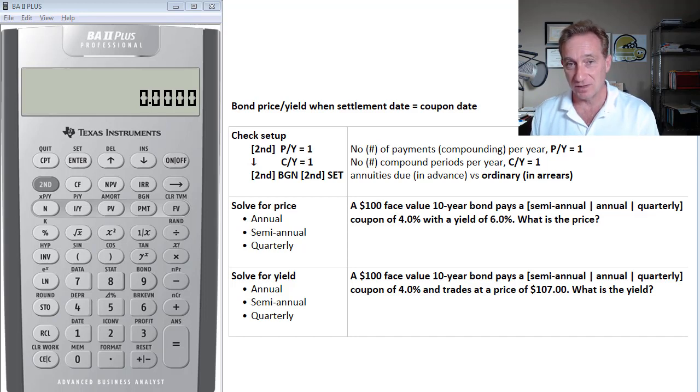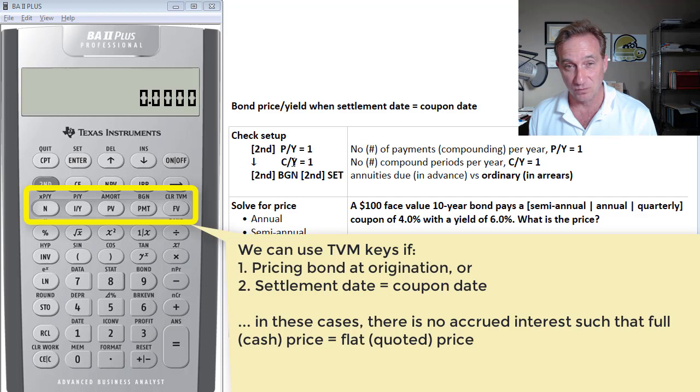And that is when we price a bond where the settlement date happens to coincide with a coupon date or when we just originate the bond, because in that case, there's no accrued interest, flat price equals full price, and we can just use the time value of money keys.